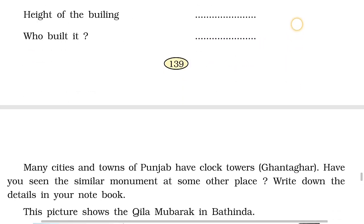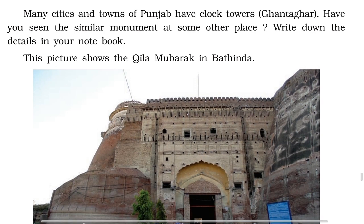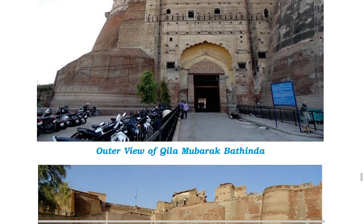Here, many cities and towns of Punjab have clock towers, called Ghantagar. Have you seen a similar monument at some other places? Write down the tale in your notebook. This picture shows the Kila Mubarak in Bathinda. You will see that many places have clock towers called Ghantagar. The picture here is the outer view of Kila Mubarak in Bathinda.